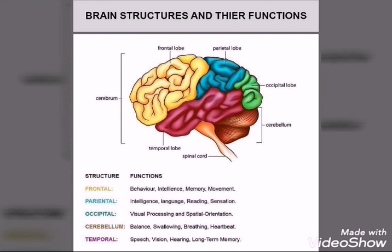Let's start today's topic: brain structures and their functions. The cerebrum is the largest part of the brain. On the back side you will see the cerebellum. The cerebrum has four lobes: the frontal lobe, temporal lobe, parietal lobe, and the occipital lobe.